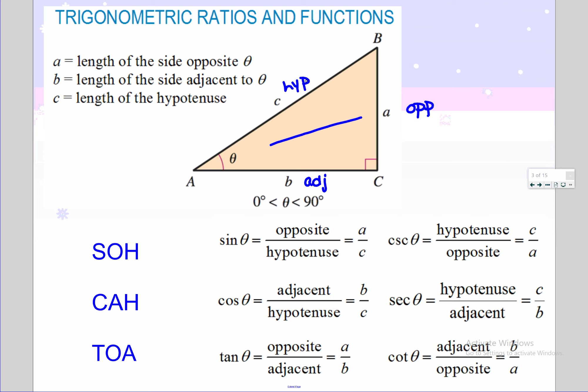SOHCAHTOA is a way that we remember at least the first three: sine opposite over hypotenuse, cosine adjacent over hypotenuse, tangent opposite over adjacent. You just need to remember for the other three, we call these the reciprocal functions because they are sine, cosine, and tangent flipped. Sine and cosecant are reciprocals, cosine and secant are reciprocals, tangent and cotangent are reciprocals.